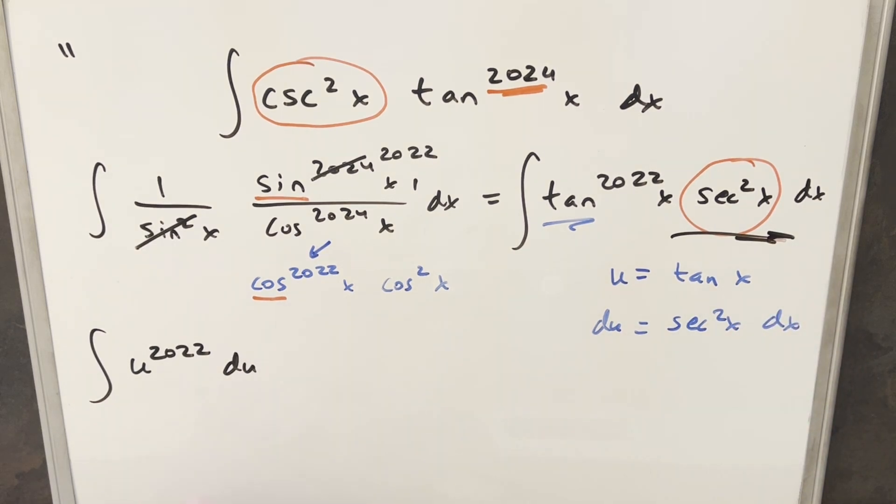And now we have a large exponent, but it's just power rule. So we can just basically finish this off or integrate in u. So this is going to become u 2023 over 2023.